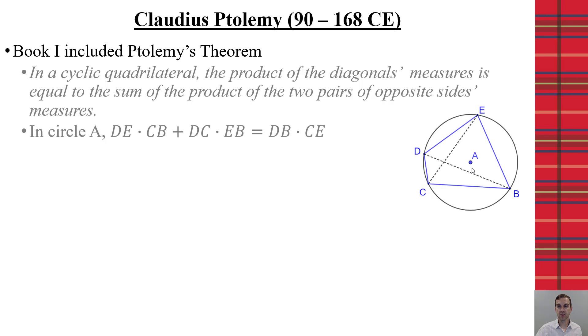Well, let's look at a cyclic quadrilateral. Here, we have cyclic quadrilateral BCDE in circle A. And what that means is if I take my opposite sides, DE times CB, and I add that to DC times EB, that will equal the product of the diagonals, CE and DB.